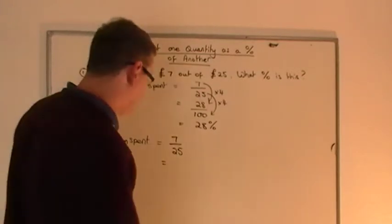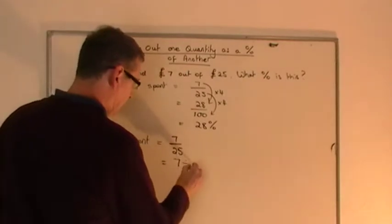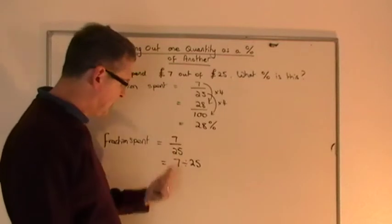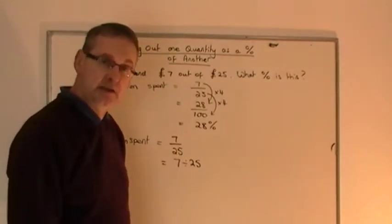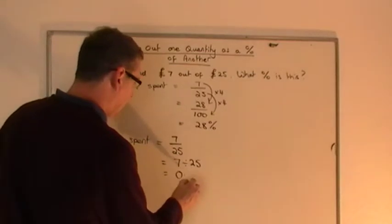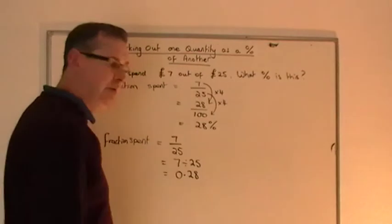On a calculator this can be done very easily. All you're going to do is take the top number and share it by the bottom number, 7 share by 25. That's what that means, share 7 share by 25. If you do that on a calculator, you will end up with the decimal equivalent, which will be 0.28.